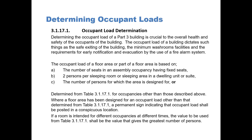Determining the occupant load of a Part 3 building is crucial to the overall health and safety of the occupants of the building. The occupant load of a building dictates such things as the safe exiting of the building, the maximum washroom facilities, and the requirements for early notification and evacuation by the use of a fire alarm system.